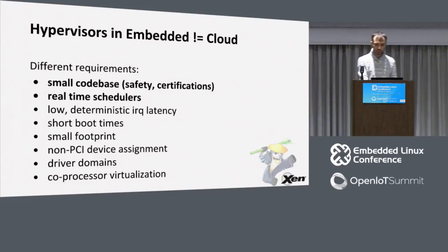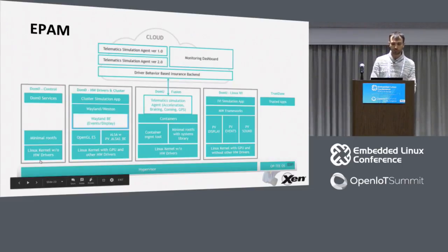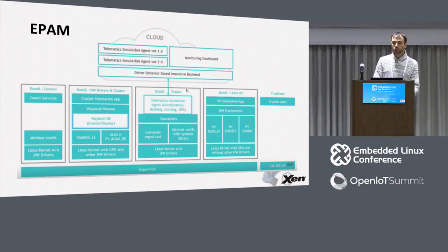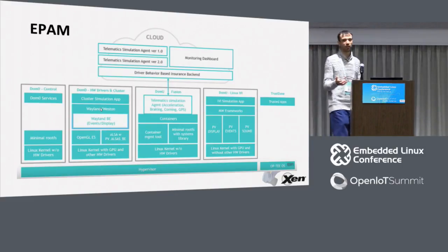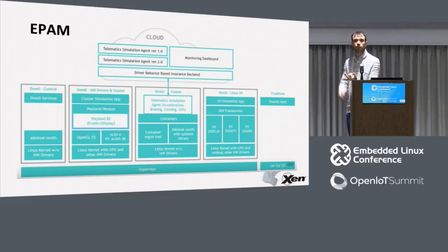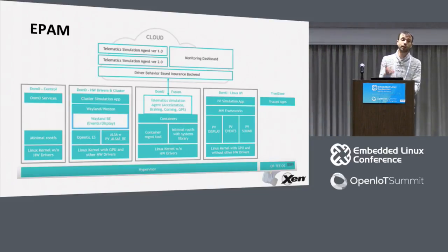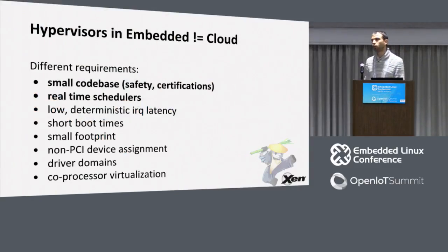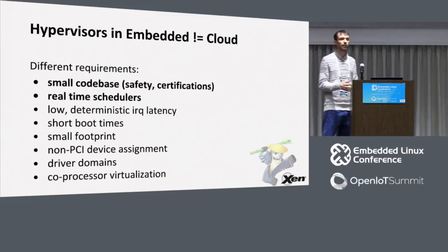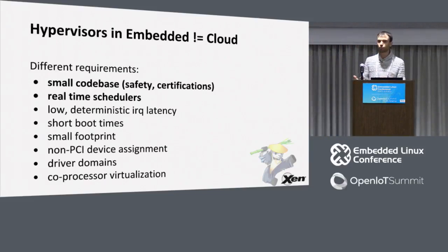Device assignment and driver domains: in general, you not only need to assign devices to a VM — like a graphics device assigned to the driver domain VM — but you also need to share it with other VMs. If for any reason the graphics VM crashes, it's bad for an infotainment system to lose control of the display, but at least you can still reboot, still upgrade, still get crash information out, and you could theoretically reboot the graphics VM without rebooting the whole system. Coprocessor virtualization: you've probably noticed that in 2018, devices and processors are kind of merging. You have more and more complex devices like GPUs that are really coprocessors, and we need to be able to virtualize those as well.